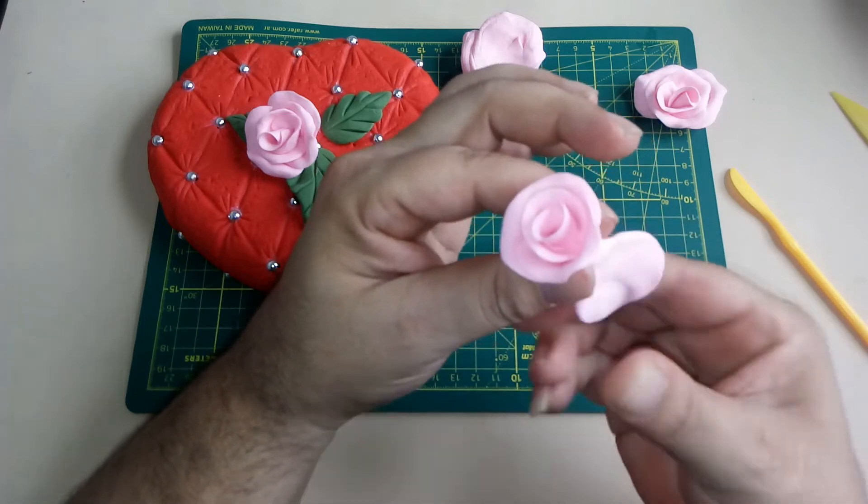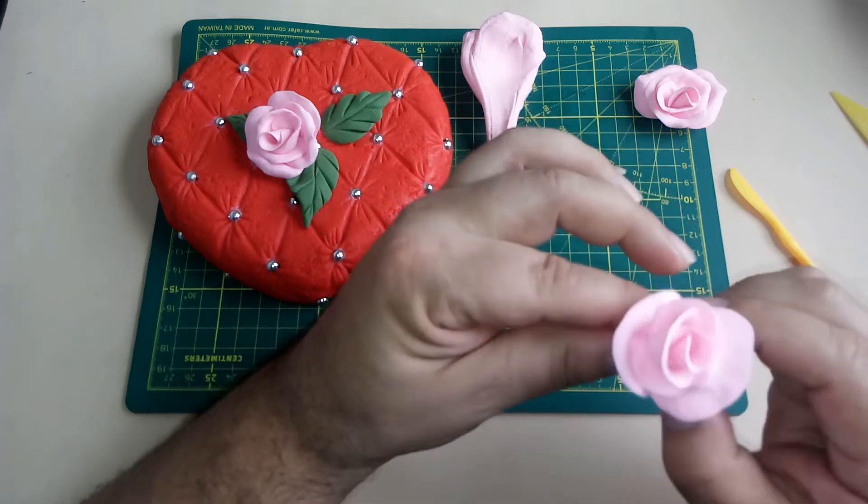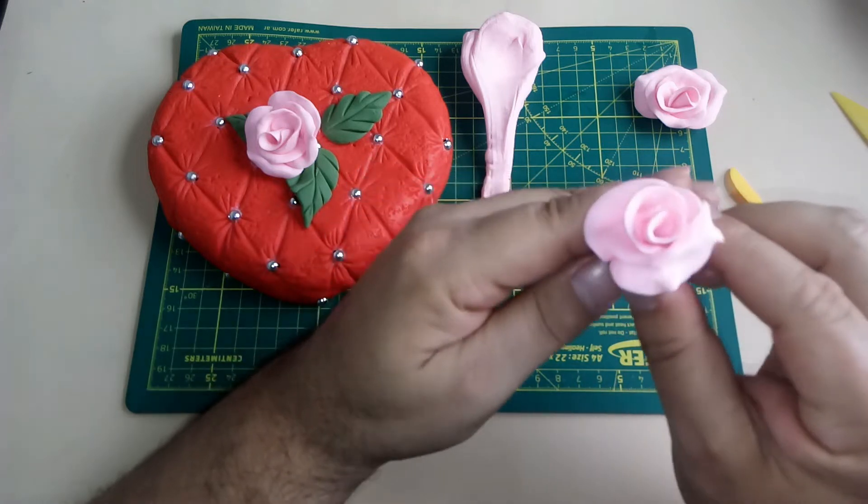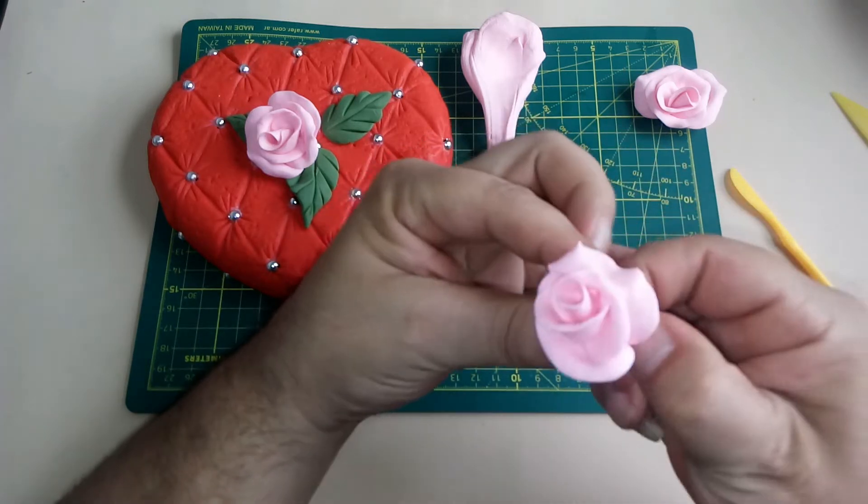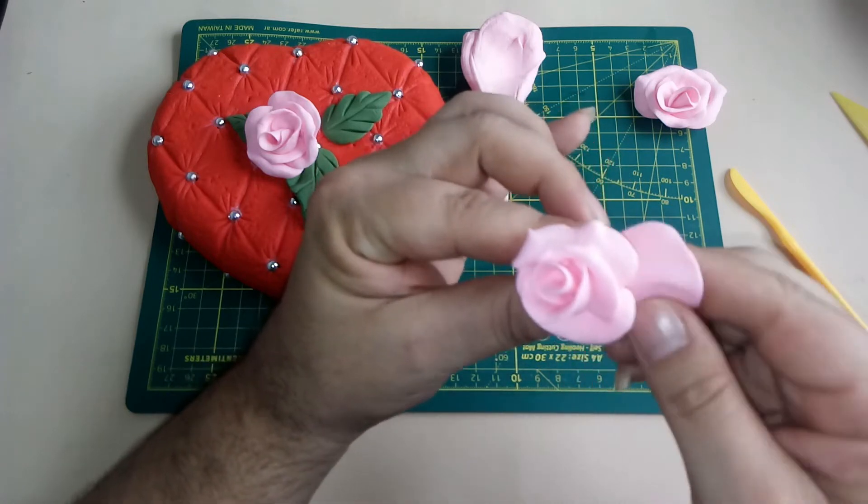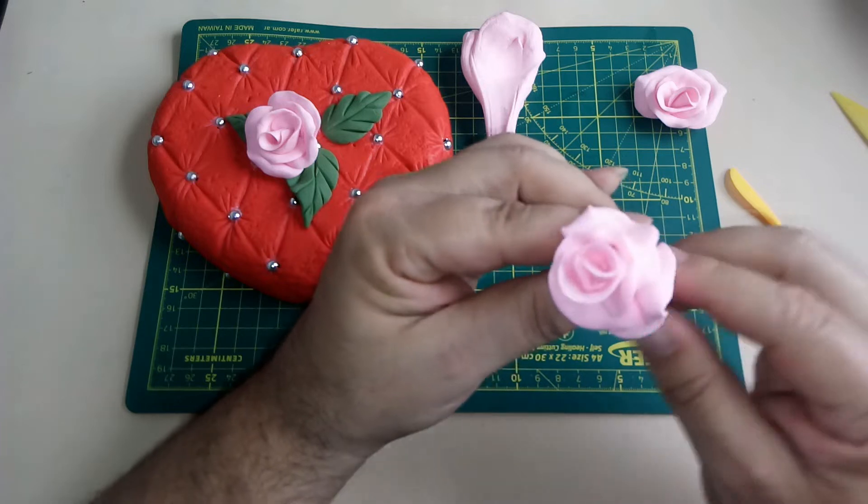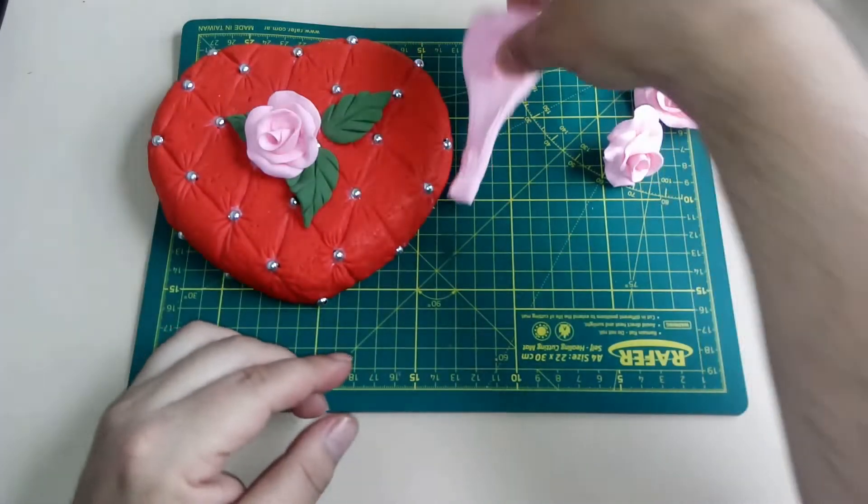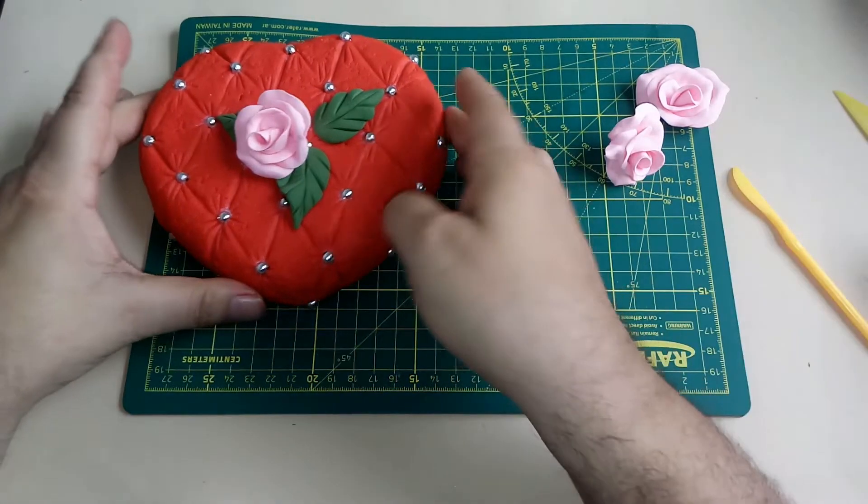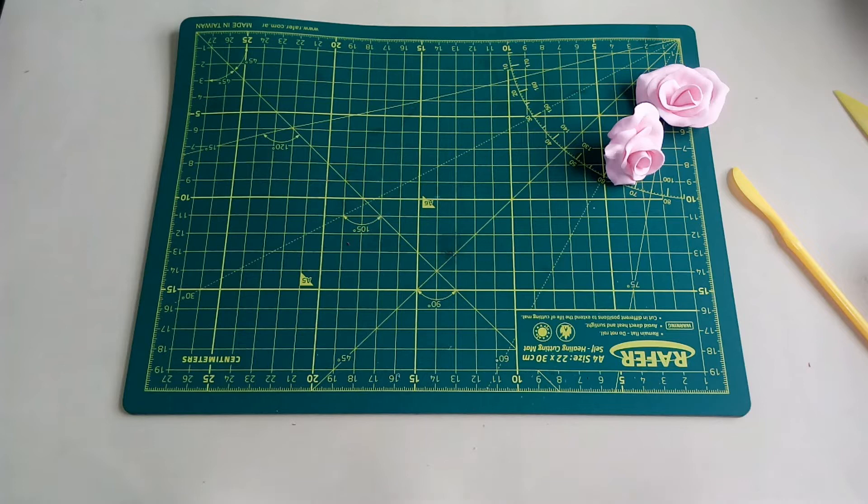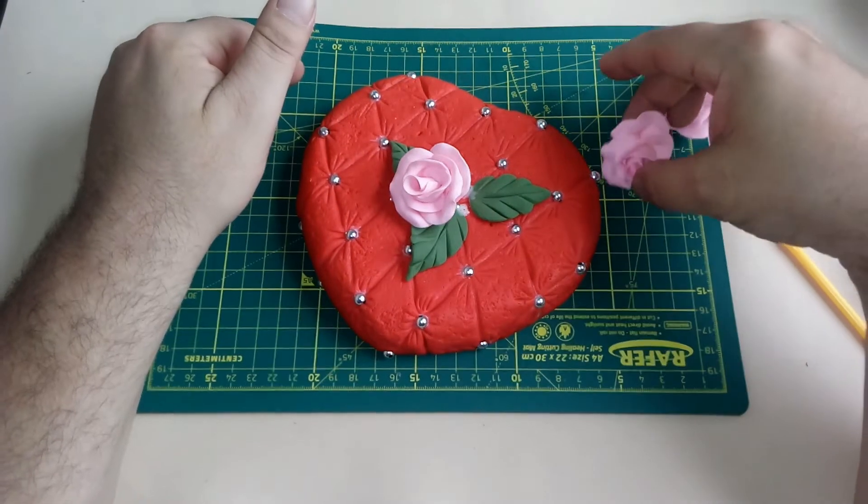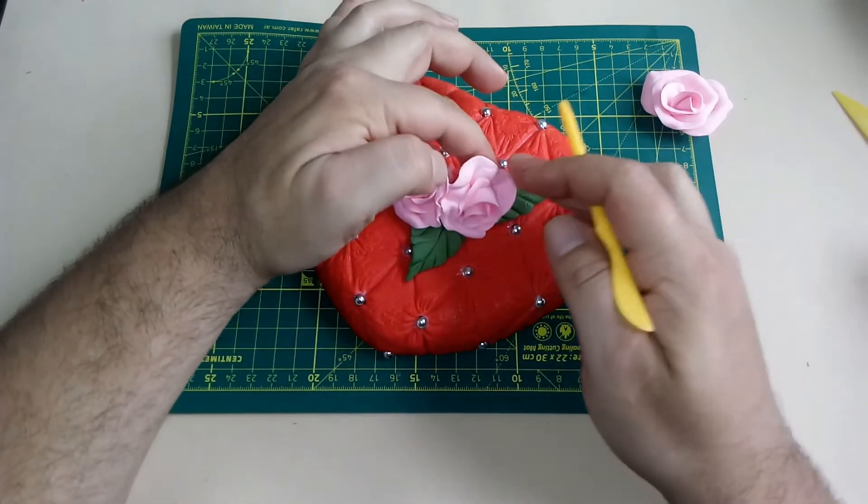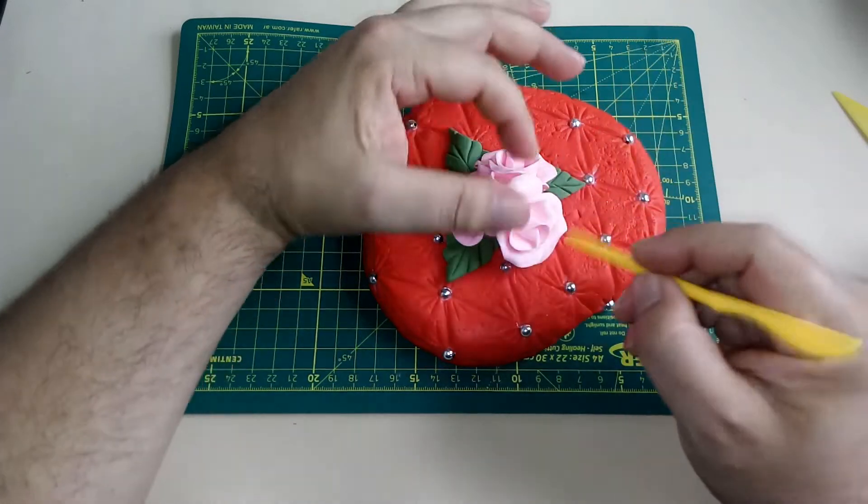Vamos a darle movimiento a este pétalo. Uno más, de este lado, movimiento. Creo que con esto ya alcanza. Me voy a asegurar de que esto tenga cola vinílica. Vamos a pegar esta aquí, y esta aquí.